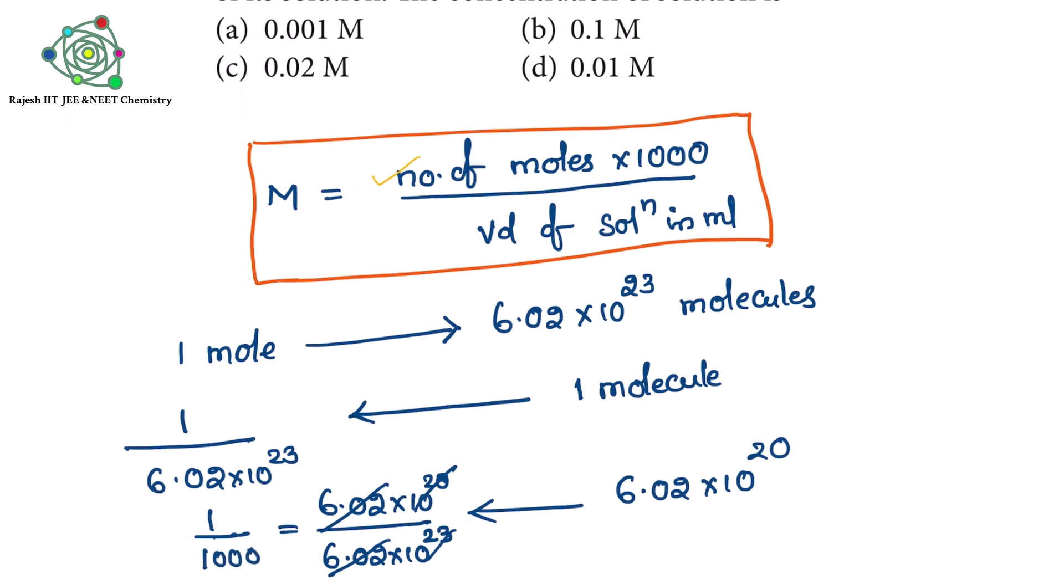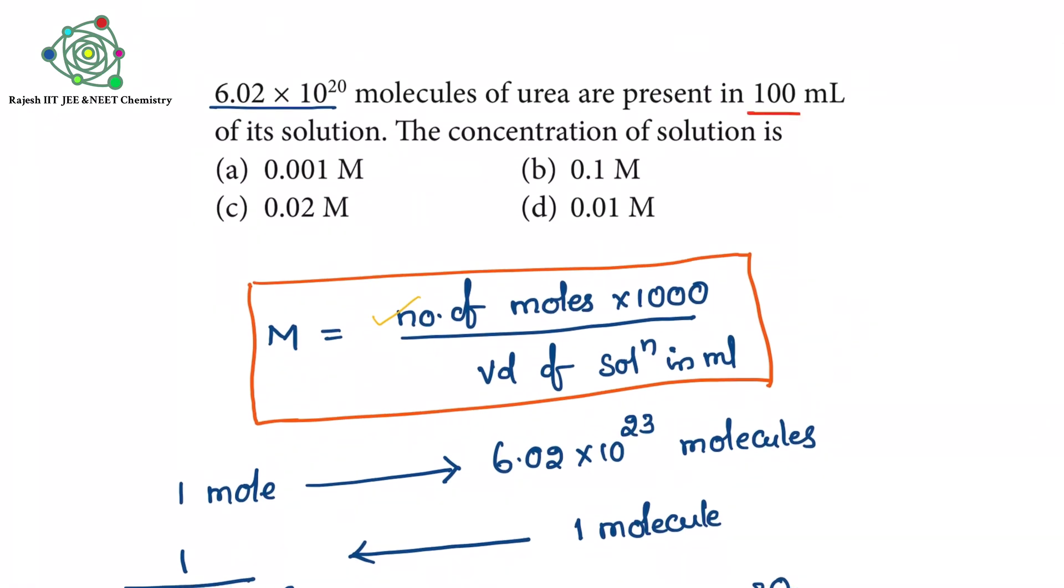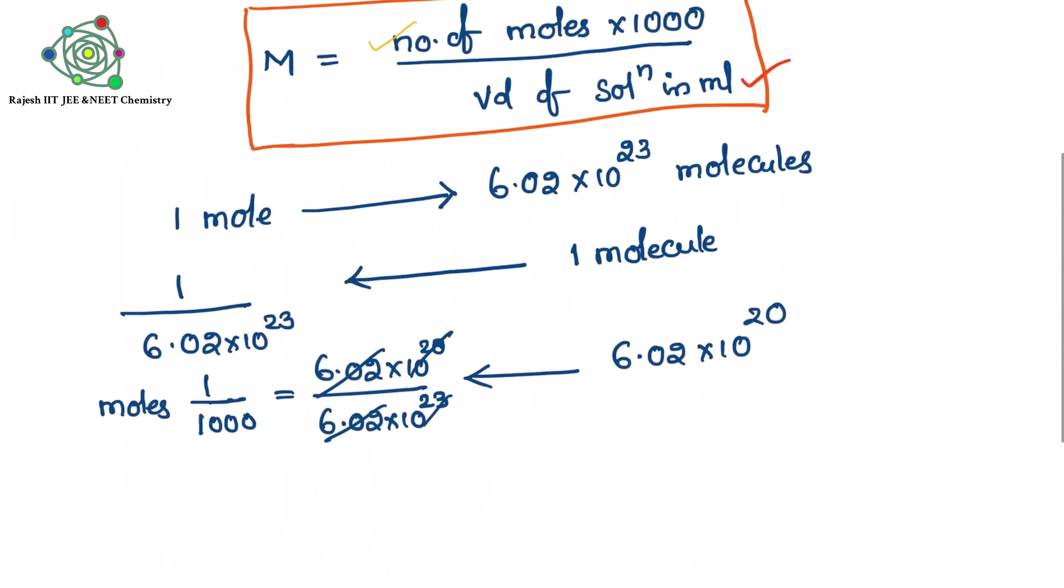6.022 cancelled. So here what we are getting? 1 by 1000. 1 by 1000 moles.